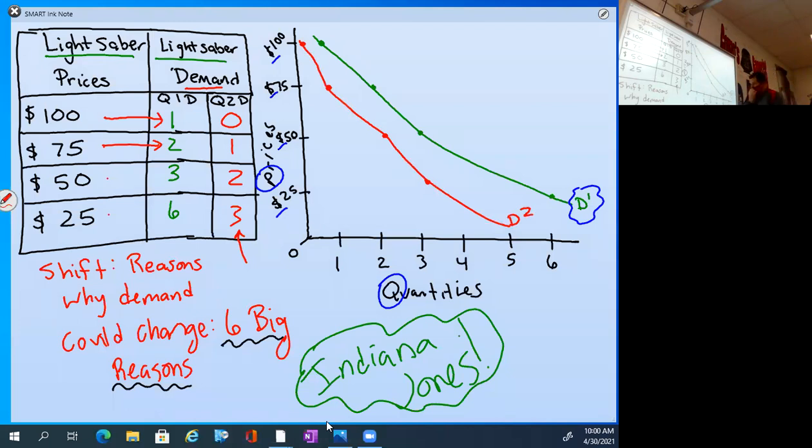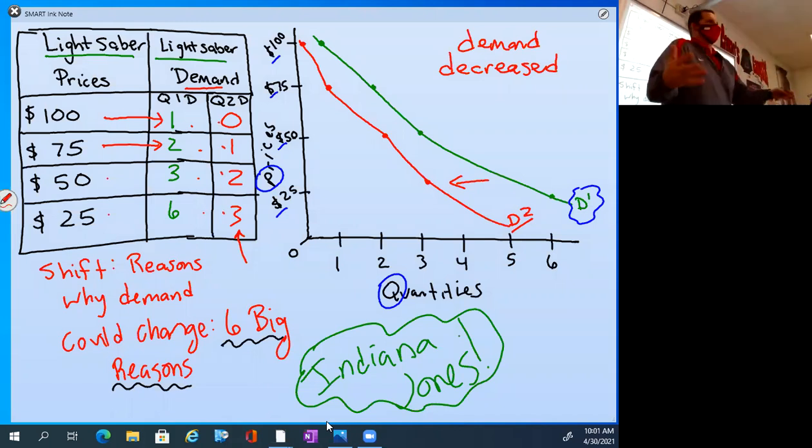That's the demand curve D2. Which way did the demand curve shift? Did it go left or did it go right? Good. It went left, the people in my class said. And that means that it decreased. Demand decreased. We can see that in our D2. We can see it in our curve, but we can also easily see it right there in our table. And you instinctively know it too, right? You instinctively know this.